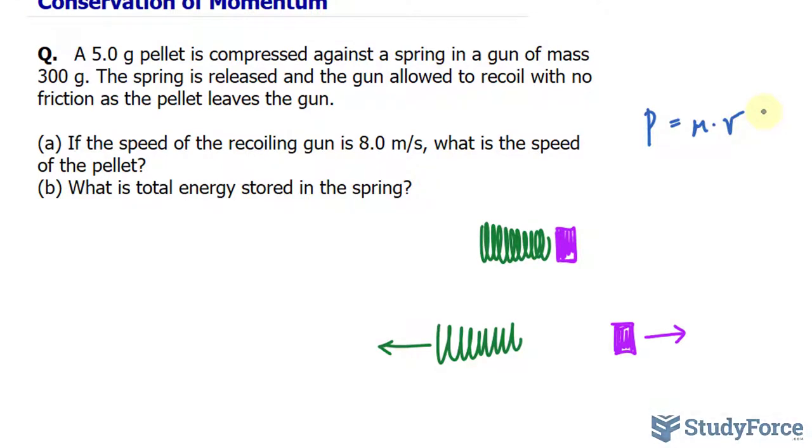adding up the momentum of the pellet and that of the gun must equal zero. So, I'll write down that the momentum of the pellet, remember we're representing momentum with P, plus the momentum of the gun needs to equal zero.